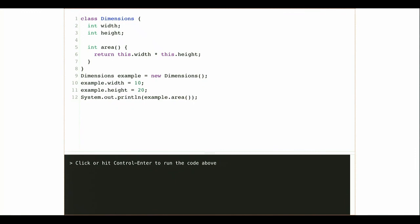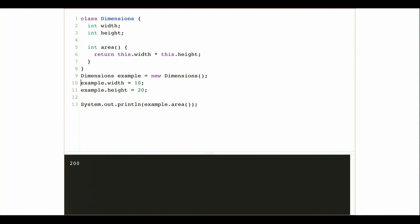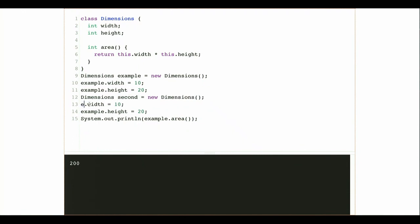After setting up a Dimensions example with height 20 and width 10, I can call this function on the instance of the class using dot notation. My object, like a string, carries around these useful methods that I can call any time I need to know the area. Let me create a second Dimensions object and give it a different width and height. I'm calling the same function but on two different instances of the class. The function declaration is the same — it takes no inputs — but it's returning two different results.